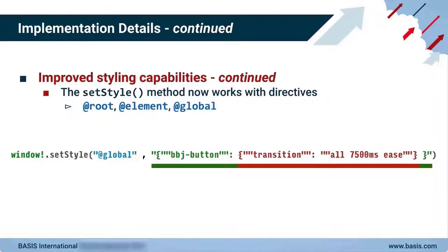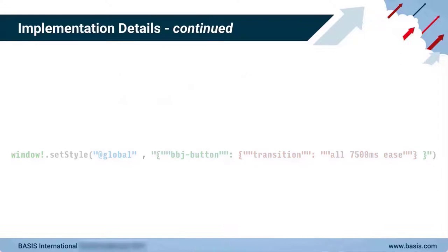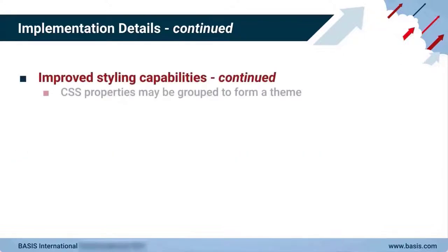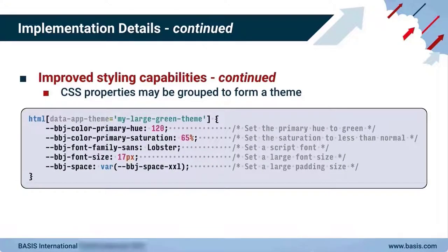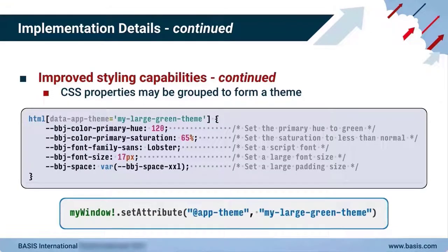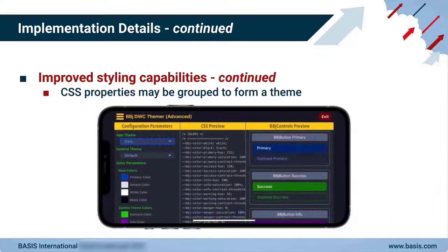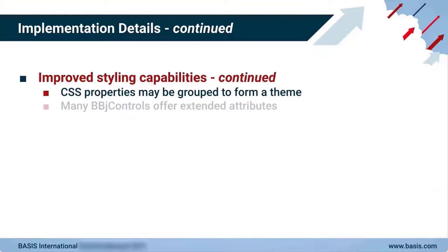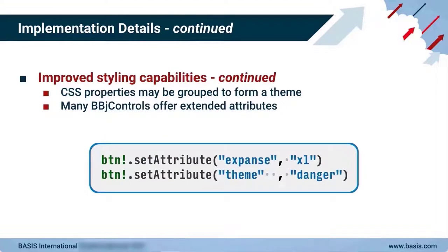These two directives support nesting styles, so it's possible to dive deep into the control's parts if desired. Better yet, developers can bundle groups of CSS properties and their chosen values to define a theme, which they can apply to a DWC app in a single line of code. Later in this session, we'll take a sneak peek at a WYSIWYG theme editor that Basis is writing and how it can create customized themes.